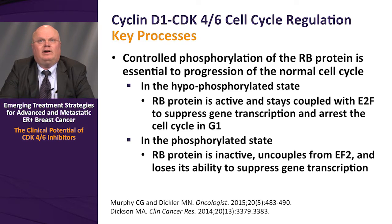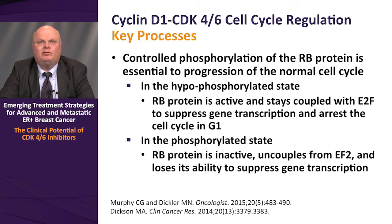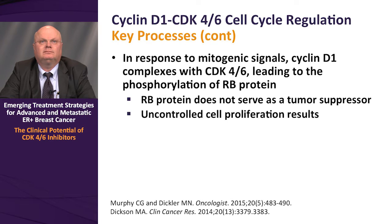Key processes that regulate the CDK4-6 cyclin-D1 pathway involve controlled phosphorylation of the RB protein, which is essential to progression of the normal cell cycle into the synthetic phase. In the hypo-phosphorylated state, RB protein is active and stays coupled with E2F to suppress gene transcription and arrest the cell cycle in G1. However, in the phosphorylated state, the RB protein becomes inactive, uncouples from E2F, and loses its ability to suppress gene transcription. In response to mitogenic signaling, cyclin-D1 complexes with CDK4-6 leading to phosphorylation of RB. The RB protein does not serve as a tumor suppressor after phosphorylation, and uncontrolled cell proliferation can result, especially if there are aberrancies in control of this pathway.